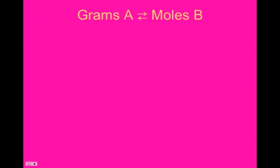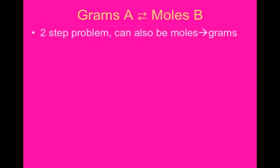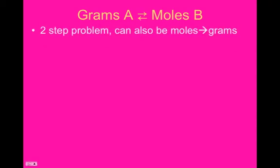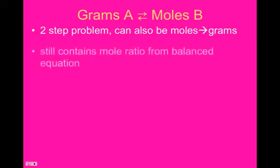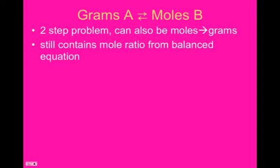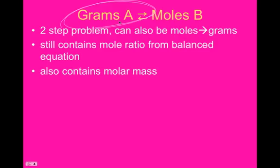All right. So, what if, instead of moles to moles, we add one more step? I'm going from grams to moles. Well, that's a two-step problem. You can go the other direction, too, where you go from moles to grams. This time, still going to have the mole ratio, always going to have the mole ratio. That's never going to change. But, now we also contain molar mass for whatever substance it is that we have the mass of.